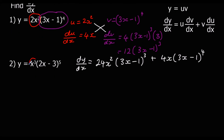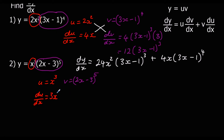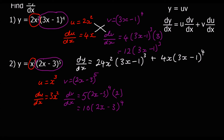Question two: again two functions multiplied together. We've got u equals x³ and v equals (2x−3)⁵. So we find du/dx which is 3x². For dv/dx, we differentiate around the bracket and multiply by the bracket differentiated, which is 2, giving us 10(2x−3)⁴.